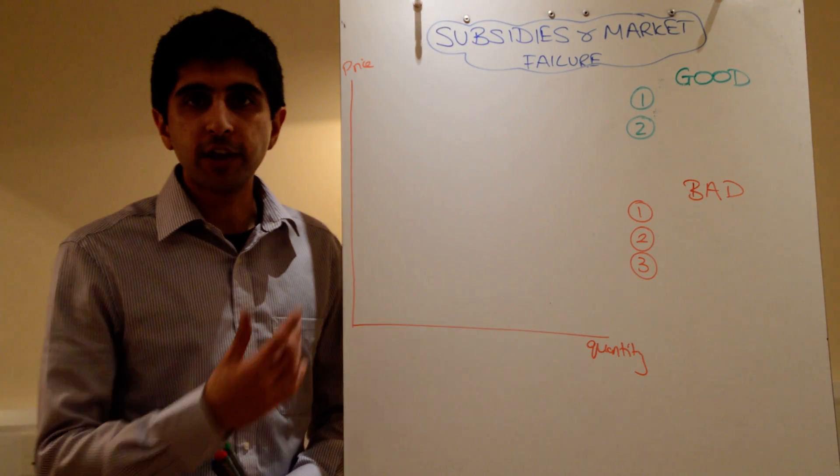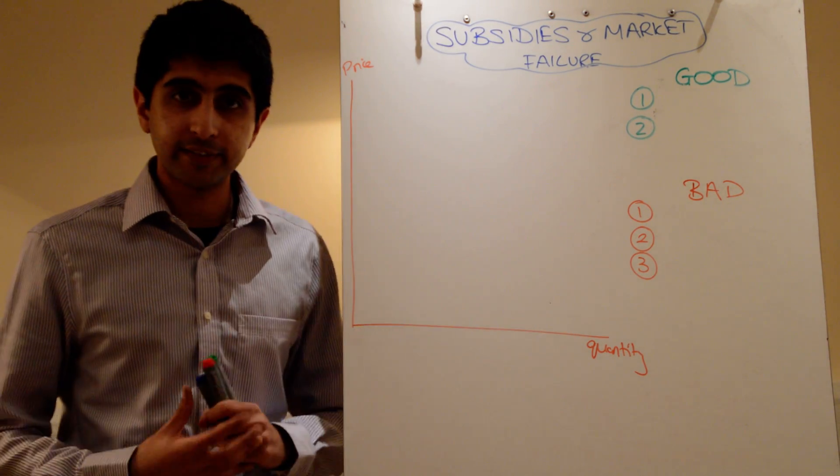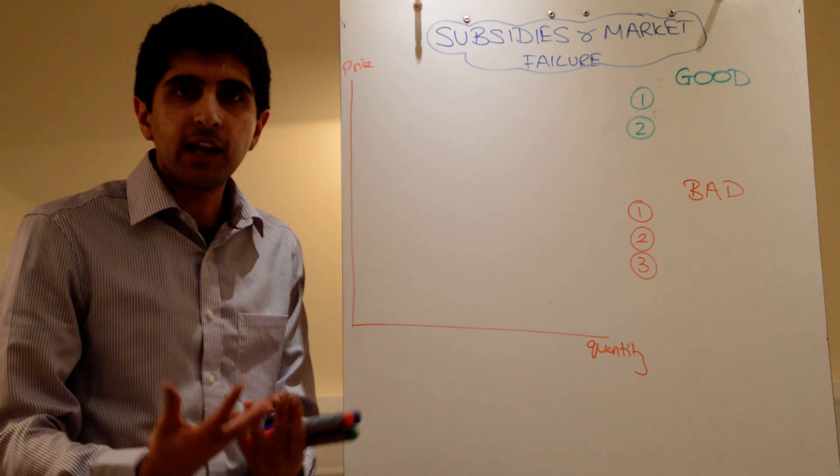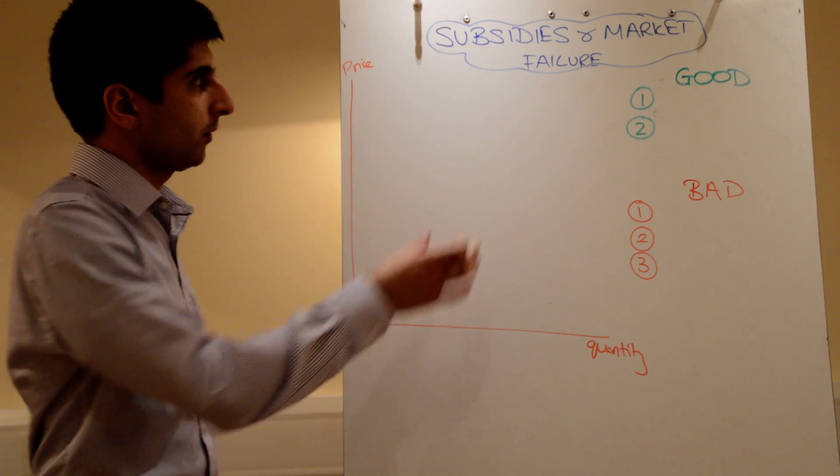We know markets can fail when there are merit goods around and also when there are positive externalities. Subsidies is one way the government can get in and try and solve these market failures, providing subsidies.